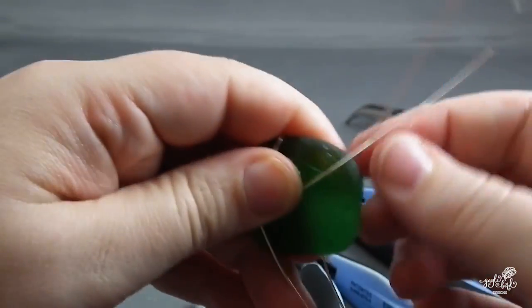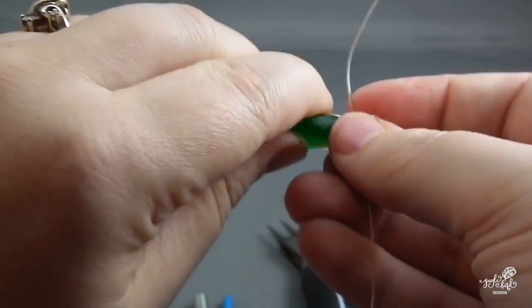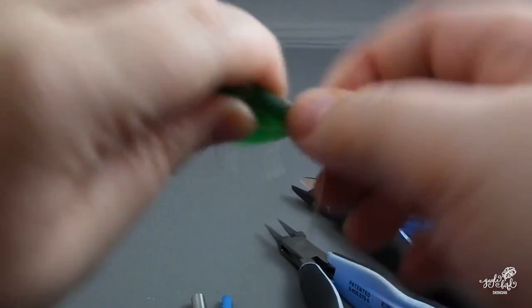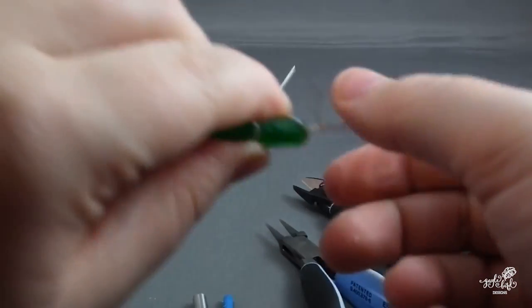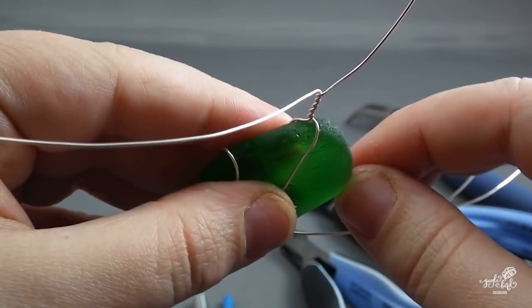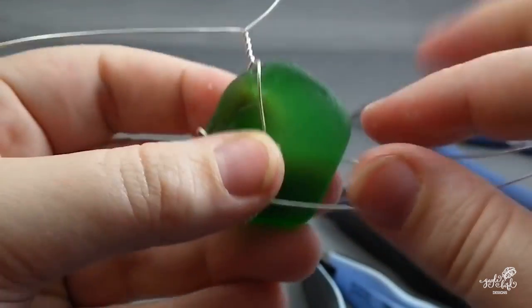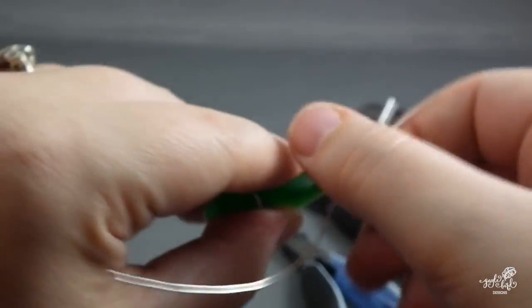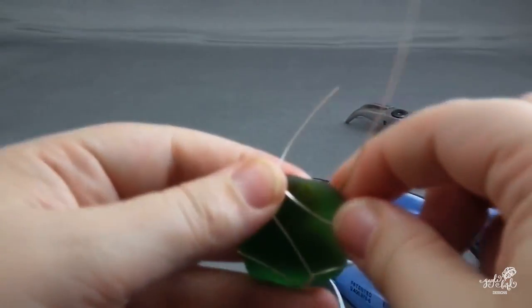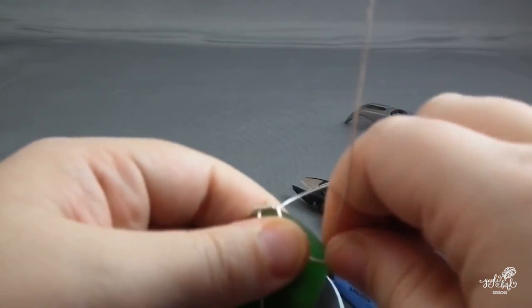You will end up with gaps but we have a way to fix that later. You will have created another X intersection at the front and back, and you want to twist those two wires together as well. Push this twist also up against the front or the side of the stone.